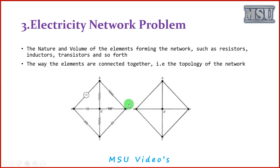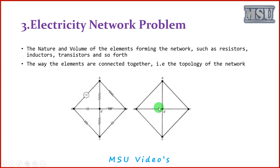The electricity network problem involves the nature and volume of elements forming the network, such as resistors, inductors, transistors, and so forth, and the way elements are connected together — the topology of the network. If component A is connected to component B, I draw an edge between them. Electrical networks are also represented using a graph.